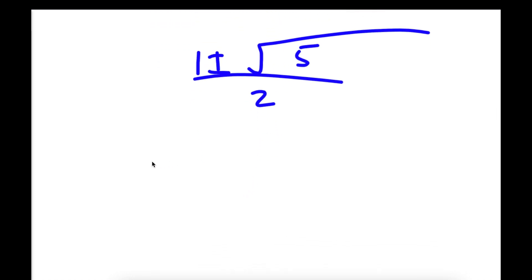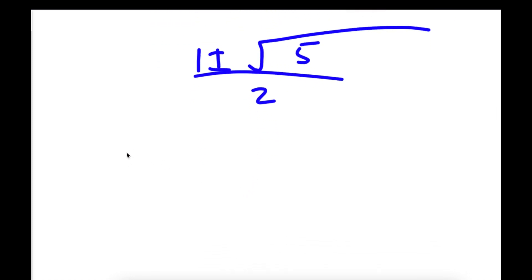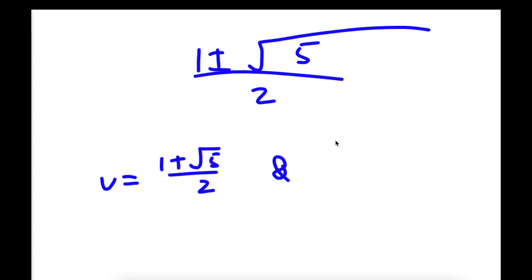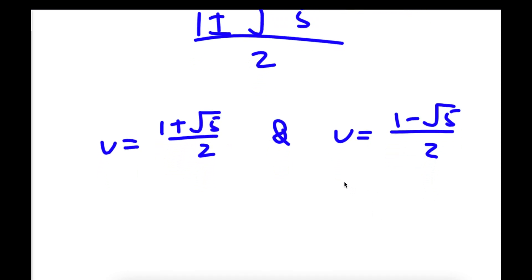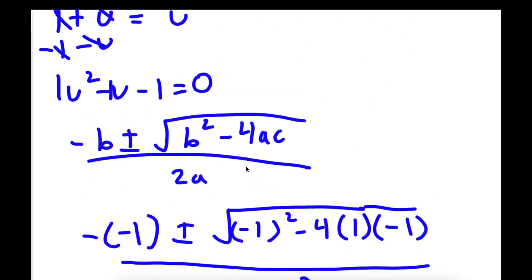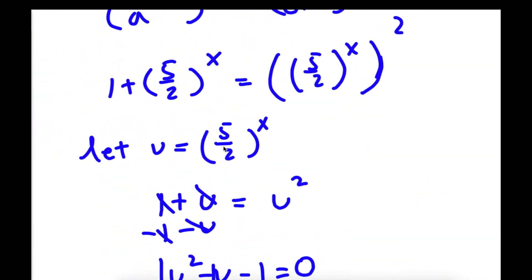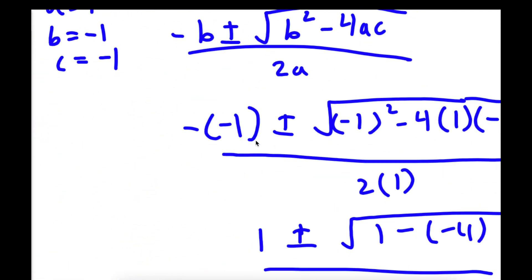This gives me two solutions. I have u is equal to 1 plus the square root of 5 over 2. Remember we stated that u is equal to 5 over 2 to the power of x.